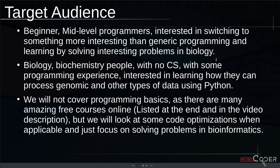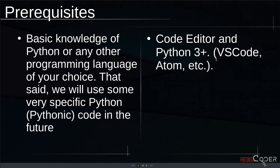We will look at some really cool code optimizations in Python to make your code smaller, faster, and more optimized. Prerequisites would be basic knowledge of Python or any other programming language, but we will use some very specific Python code in our course, which is called Pythonic code. For the code editor, you can use anything you want. I use VS Code, you can use Atom, or even Jupyter notebooks if you know what they are — if you don't, I'll tell you a bit later in this video.